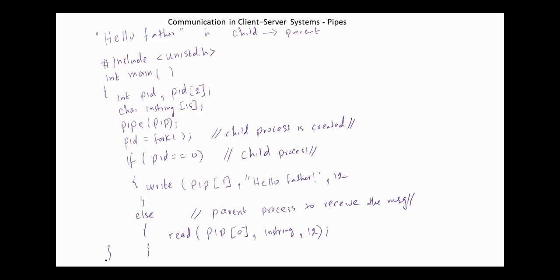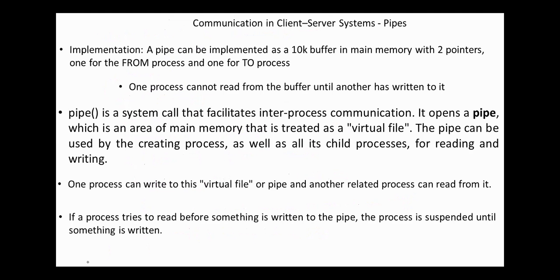A pipe can be implemented as a buffer in main memory, usually not less than four kilobytes, with two pointers: one for the from-process and one for the to-process. One process cannot read from the buffer until another has written to it.